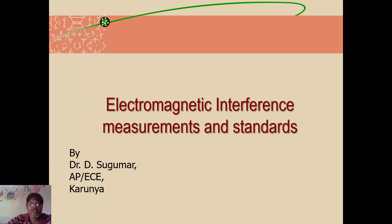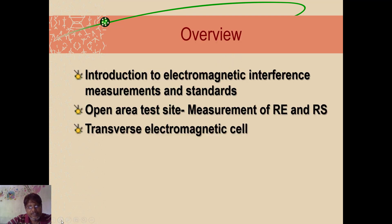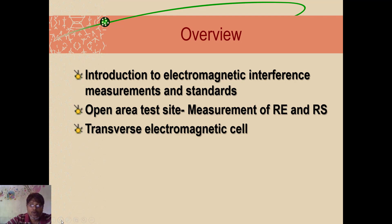Hello everyone. In this video we will discuss EMI measurements and standards. This is almost the content we covered in the first chapter, so it's a recap of what we learned. First we'll see what EMI measurements and standards are, and one important measurement is the open area test site, made exclusively for radiated emission and radiated susceptibility. Then we'll discuss the transversal electromagnetic cell, the TEM cell, and its architecture.